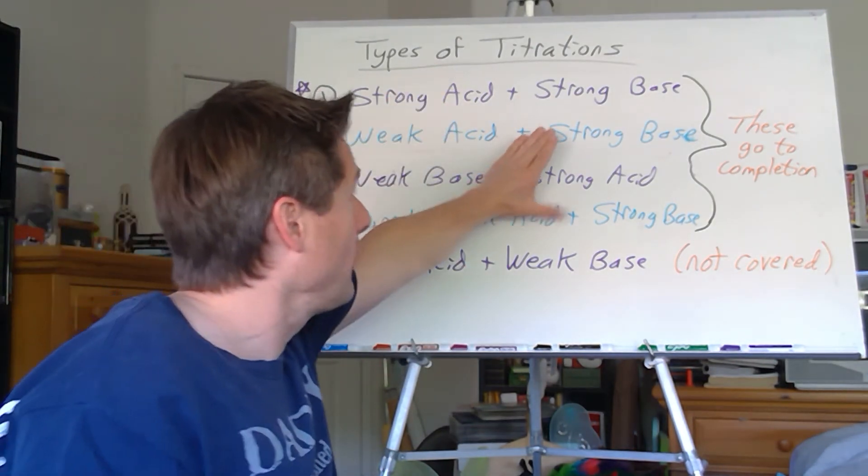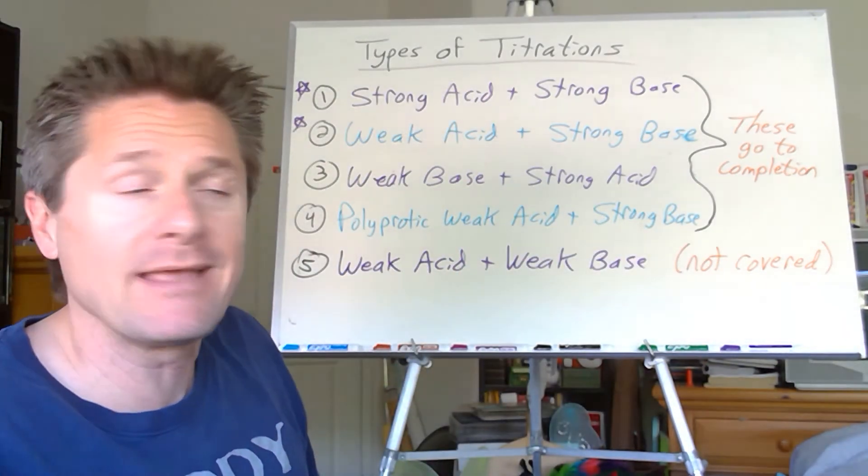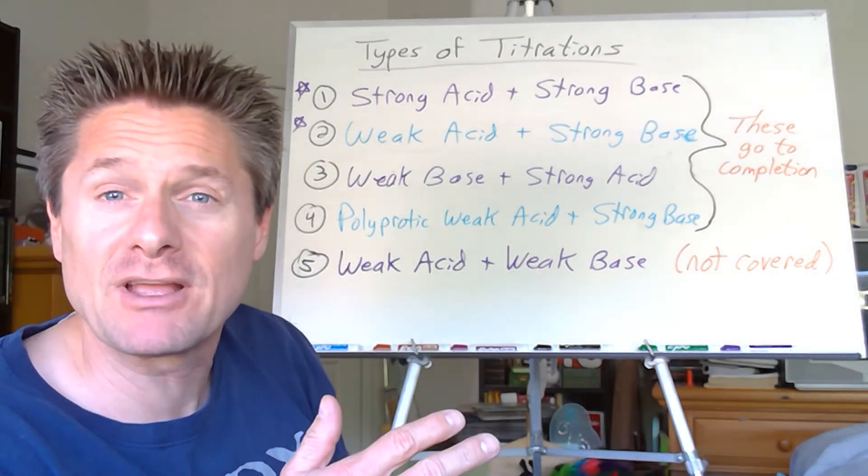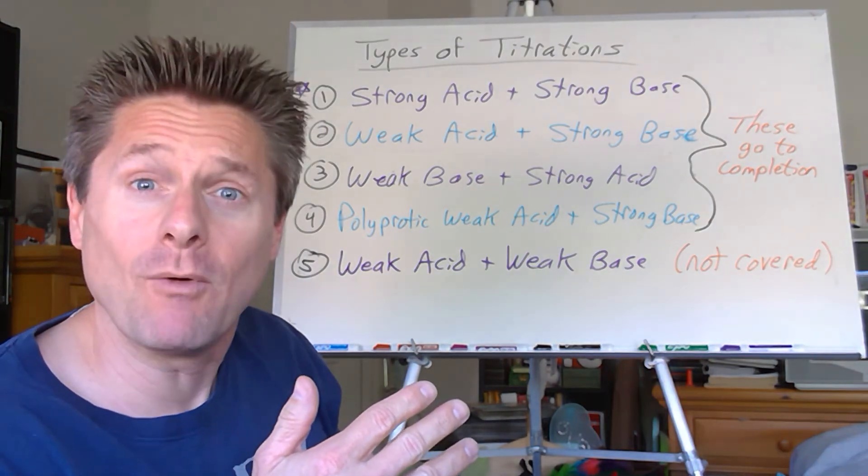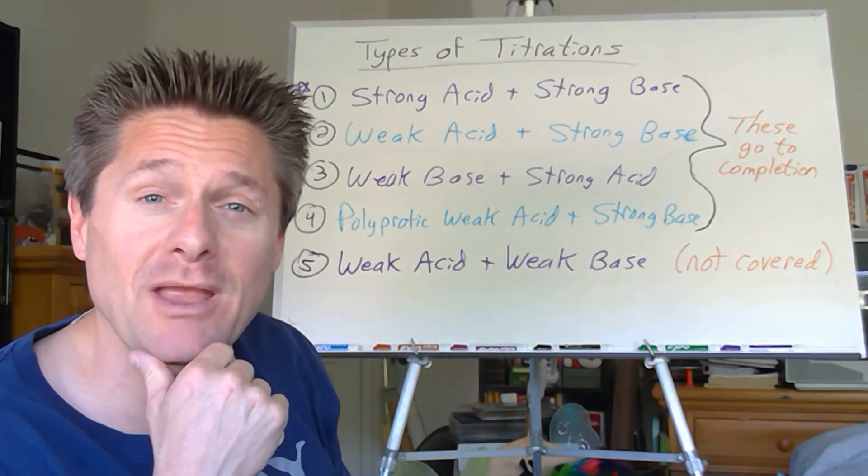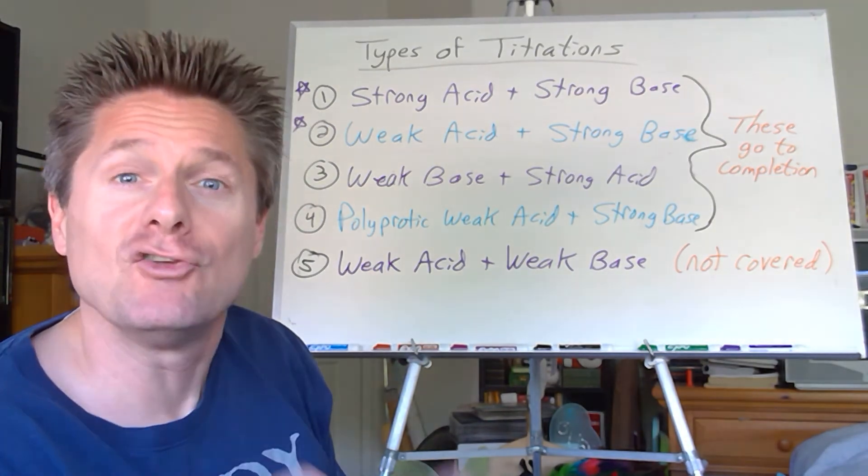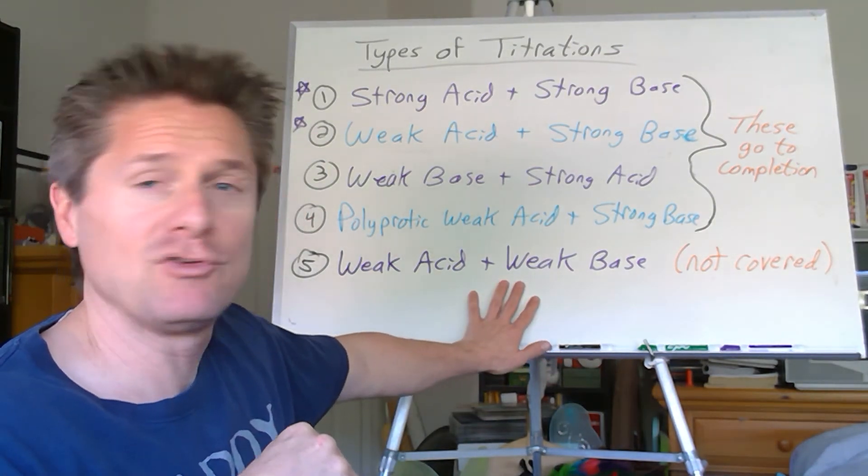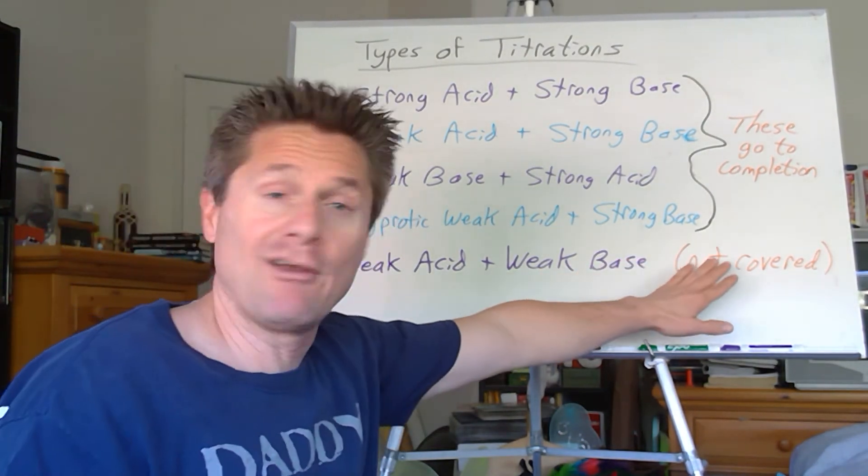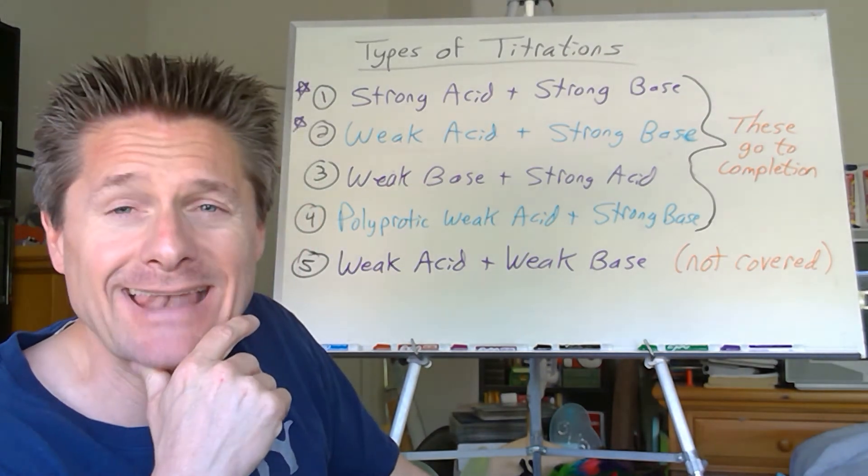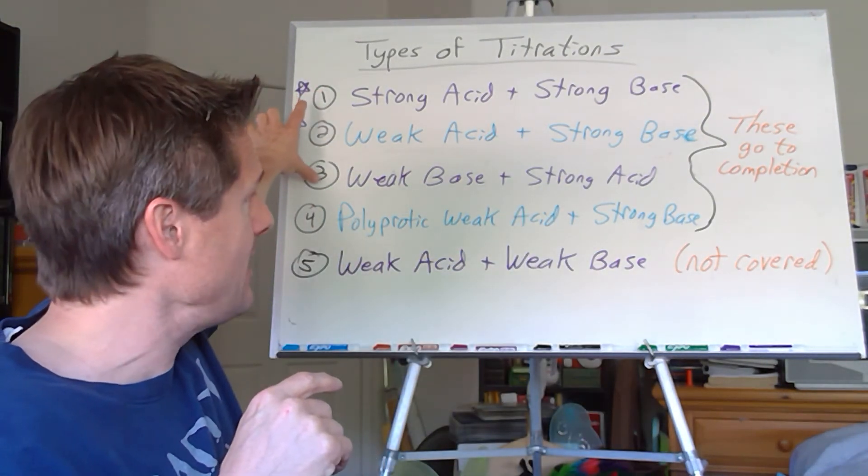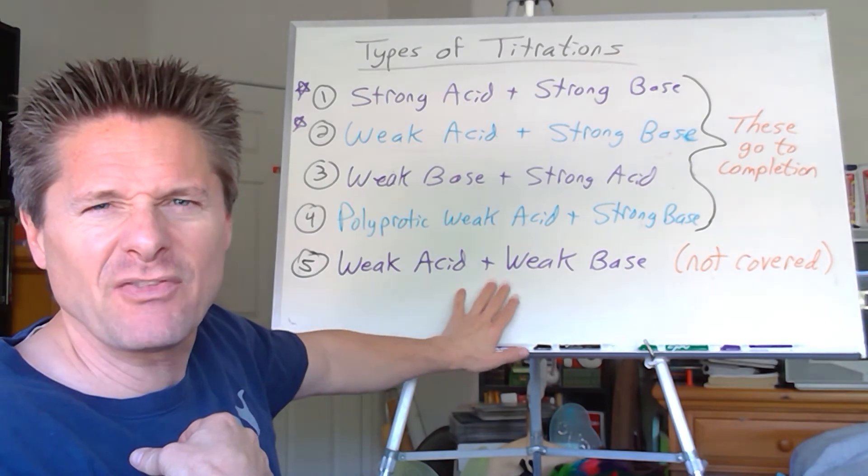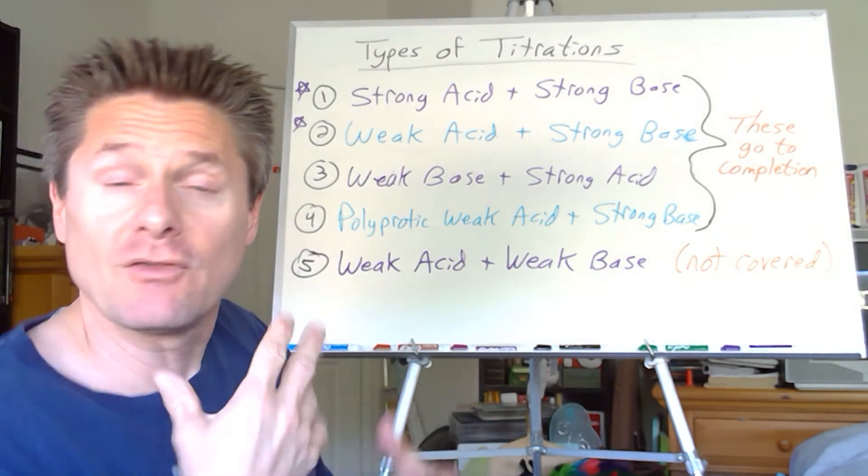Last one. All four of those, since you see a strong species there, those will go to completion. But what if we have a weak acid with a weak base? Oh man. That means it's not going to drive to completion. Good luck with the calculations on that one. You can't do that in first semester of general chemistry because they haven't really looked at equilibrium like you do in second semester. So it's possible, but it would be highly unpleasant to do. And we don't do that in lab because it doesn't run to completion. So we are not going to cover that in this class.